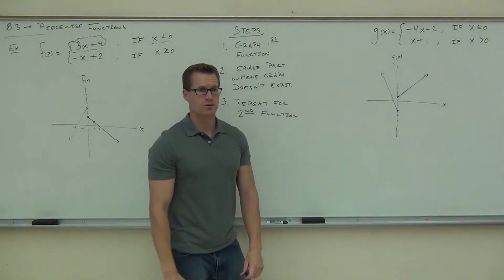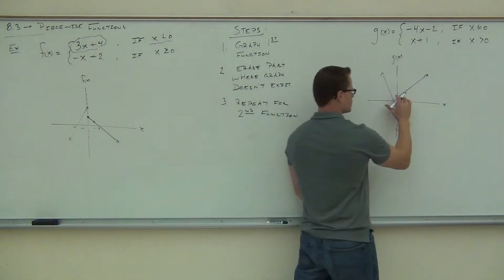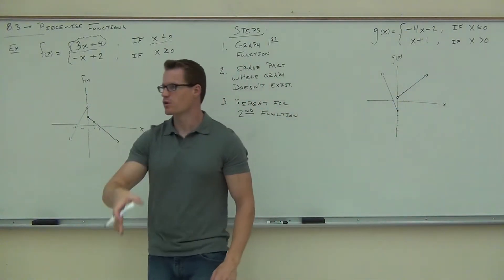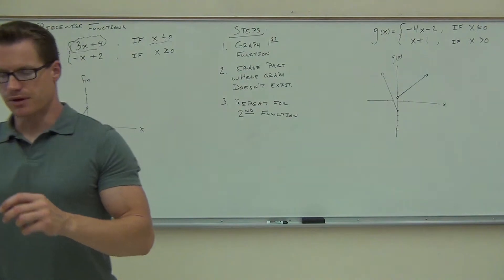Why is it an open circle? Because it doesn't have that equal to here. Good. So I'm going to change that to an open. You can't ever have two points in the same vertical line. So we're done right there at that point.